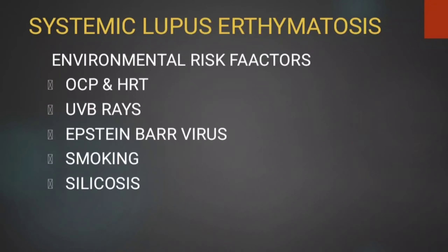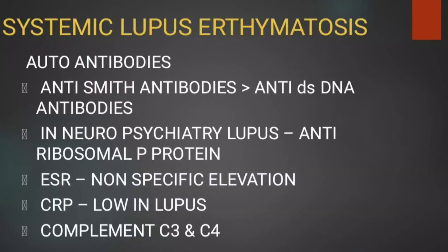The autoantibodies seen in patients of SLE include anti-Smith antibodies and anti-dsDNA (double-stranded DNA) antibodies. Anti-Smith antibodies are found to be the most specific type of autoantibodies for SLE. In case of neuropsychiatric lupus, anti-ribosomal P-protein antibodies are seen.